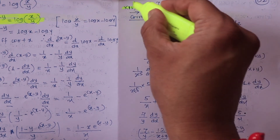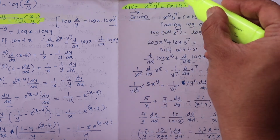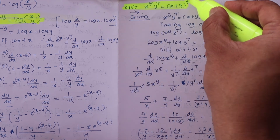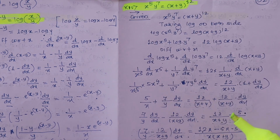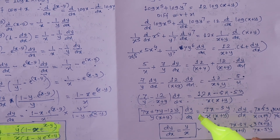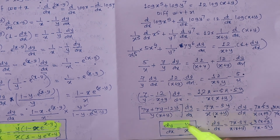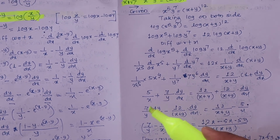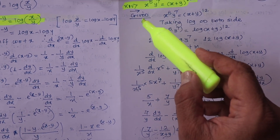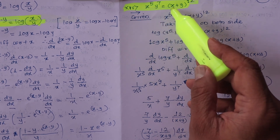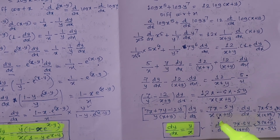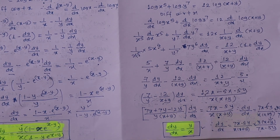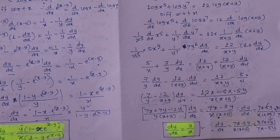We have completed 14 examples on implicit functions. Next we will see problem number 2 for implicit functions. The derivative of x raised to 5 times y raised to 7 equals (x plus y) raised to 12 gives dy/dx equals y upon x. We will go to the next topic.